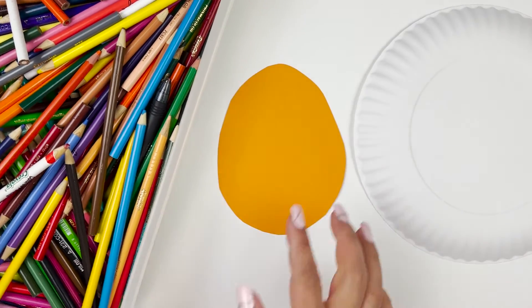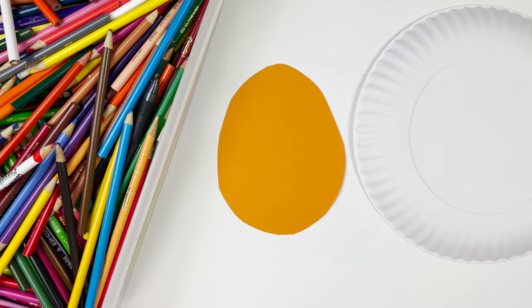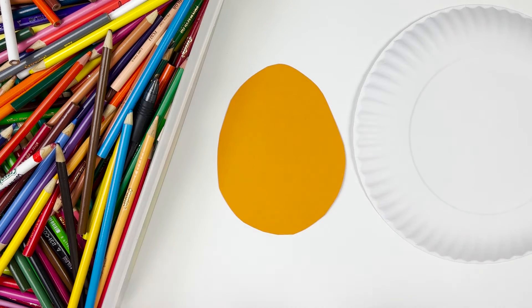And we're going to take our scissors and we're going to cut this out. Now, here is our egg. With our colored pencils, we're just going to draw some decorations on our egg. Just have fun with it and draw shapes and curvy lines and straight lines and make it your own.